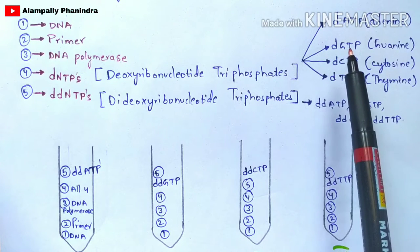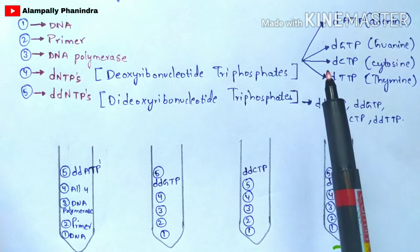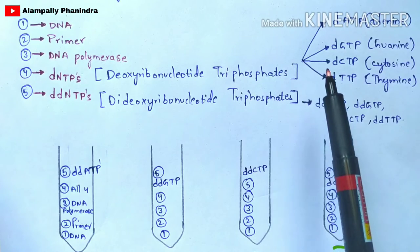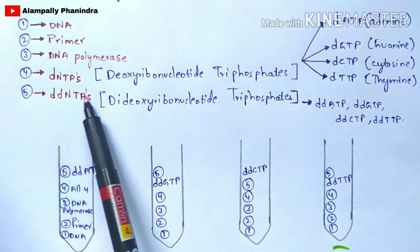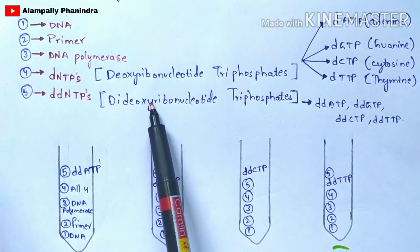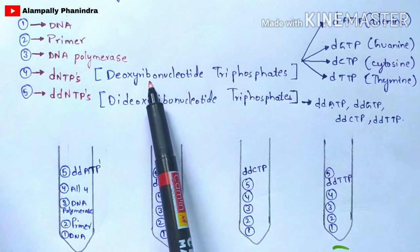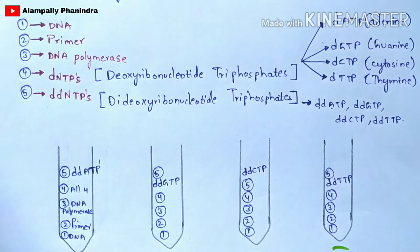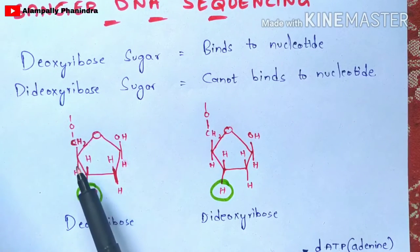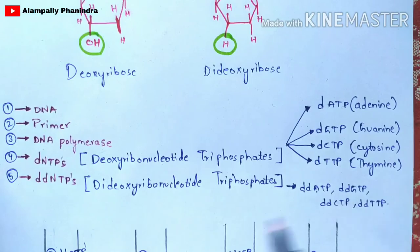dATP is deoxyriboadenosine triphosphate, dGTP is deoxyriboguanosine triphosphate, dCTP is deoxyribocytosine triphosphate, and dTTP is deoxyribothymine triphosphate. Note that uracil is not present in DNA — it is present in RNA. The fifth ingredient is ddNTPs — dideoxyribonucleotide triphosphates — which contain dideoxyribose sugar, as opposed to dNTPs which contain deoxyribose sugar.